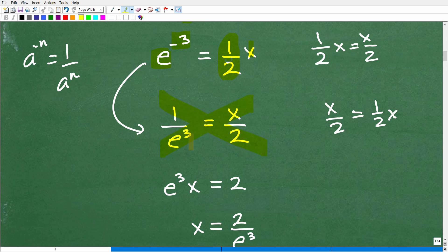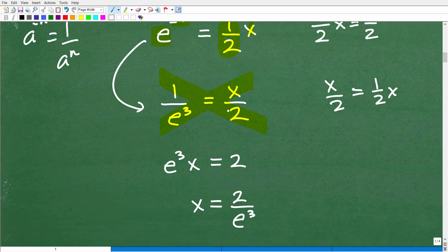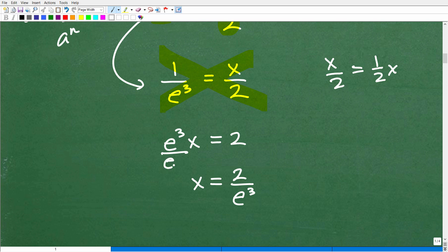Okay, 1 times 2 is equal to x times e to the cube power. So here I have x times e to the cube right there. I have 1 times 2, that's 2. So to solve for x, I'm just going to simply divide both sides of the equation by e cubed. And there is the final answer.